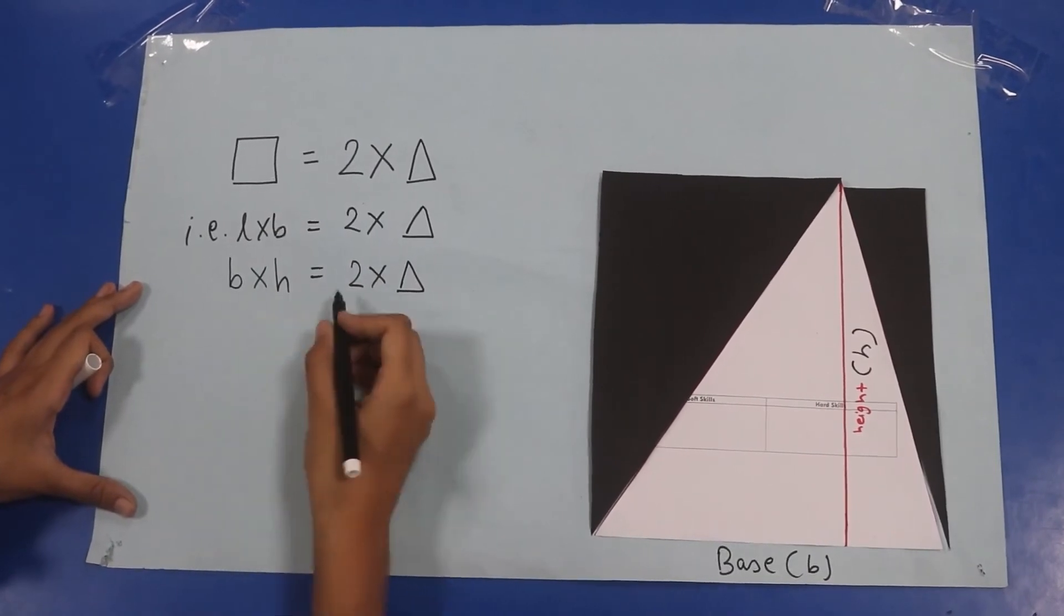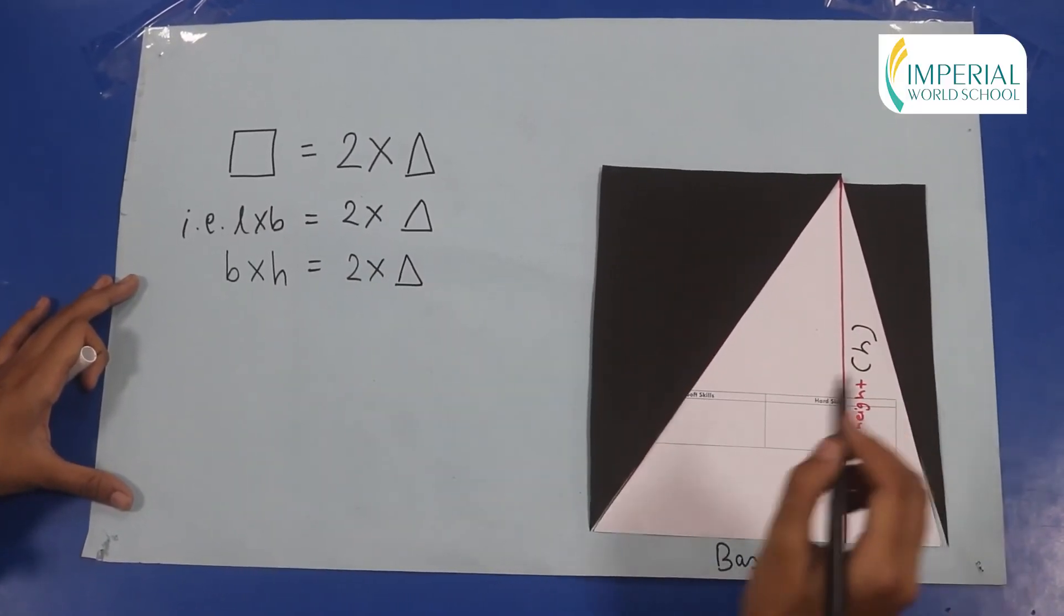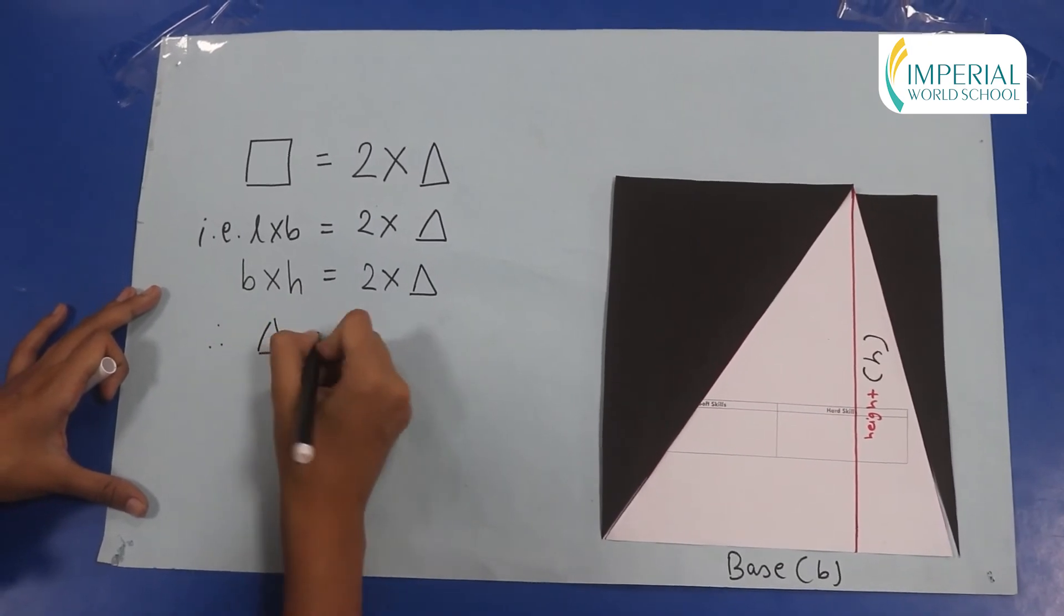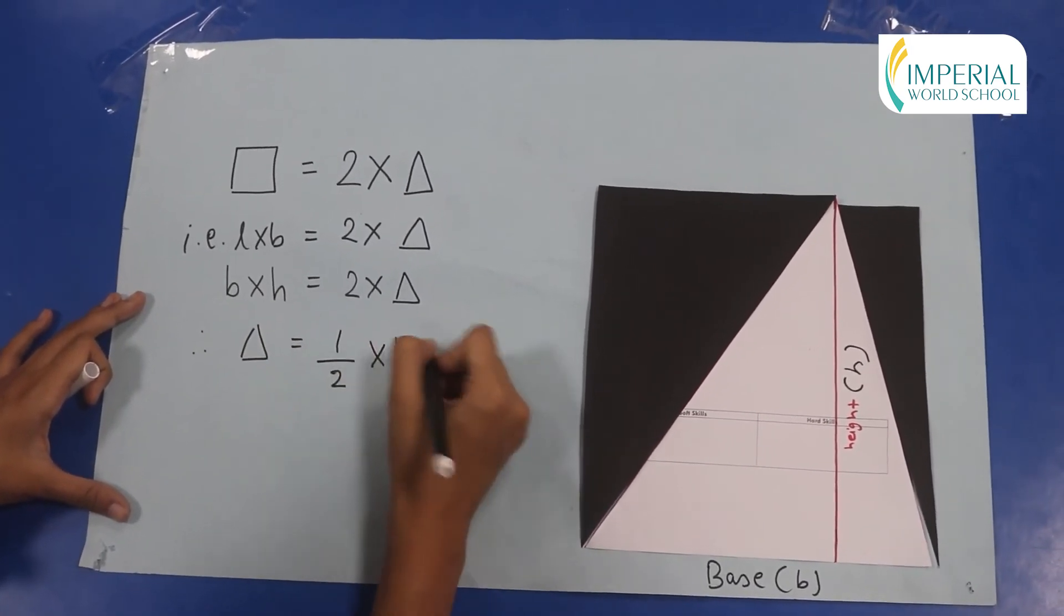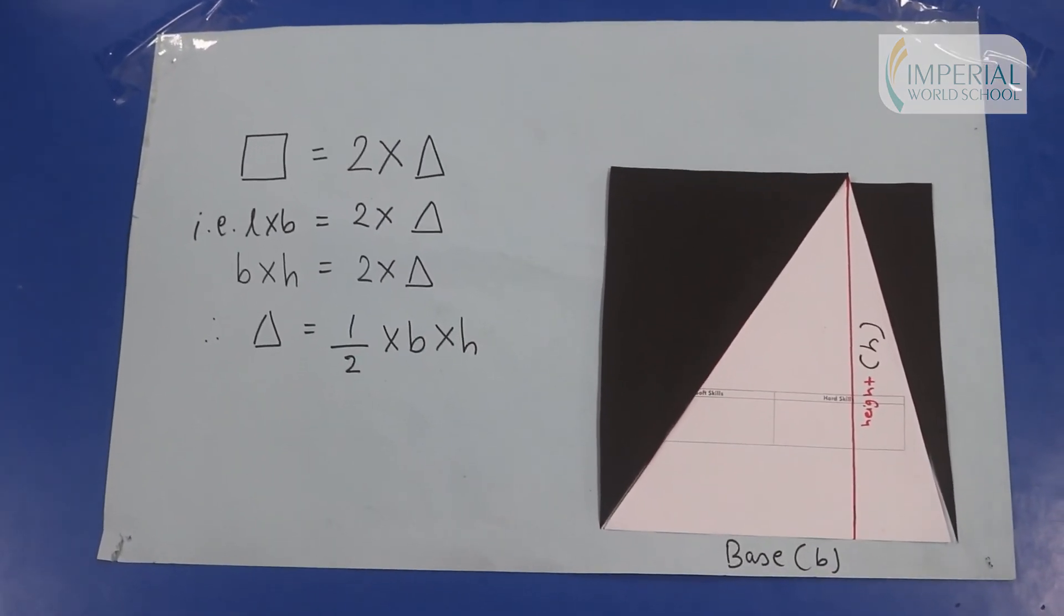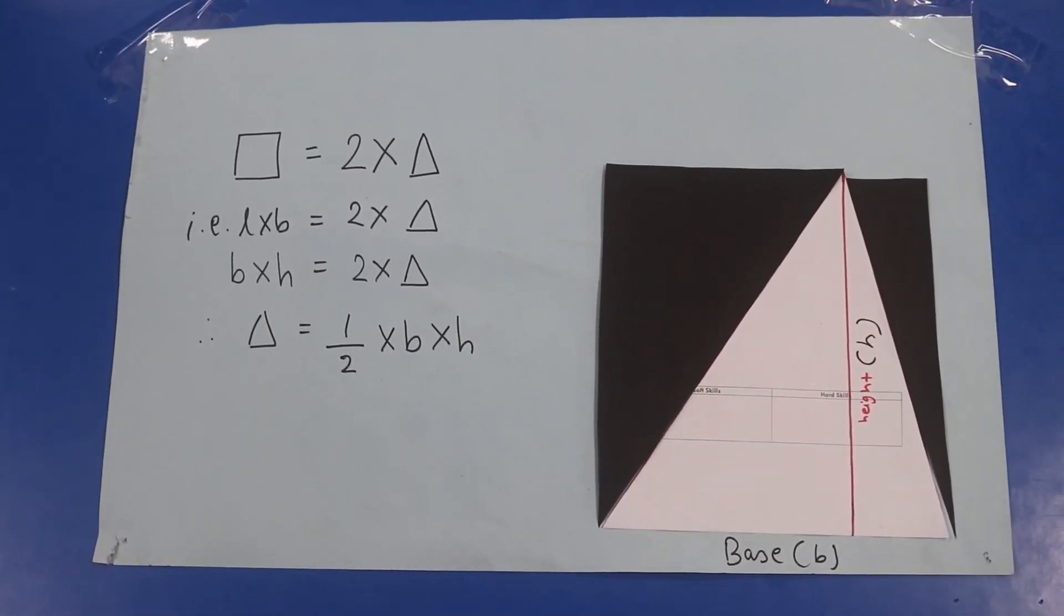And now base into height equals to two times the area of this triangle. That means that therefore the area of triangle will be half into base into height. This way I've proved that the area of triangle is half of the product of base and height.